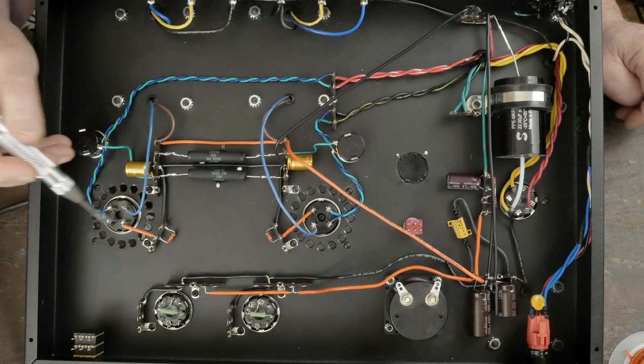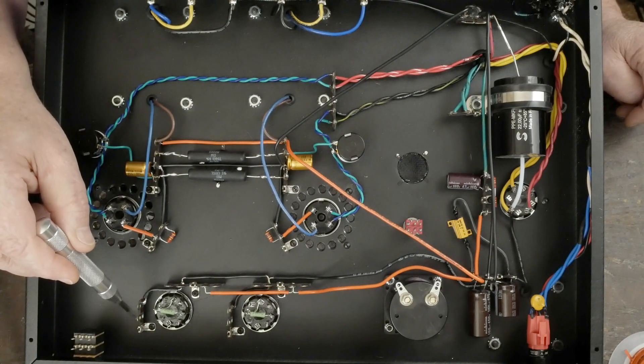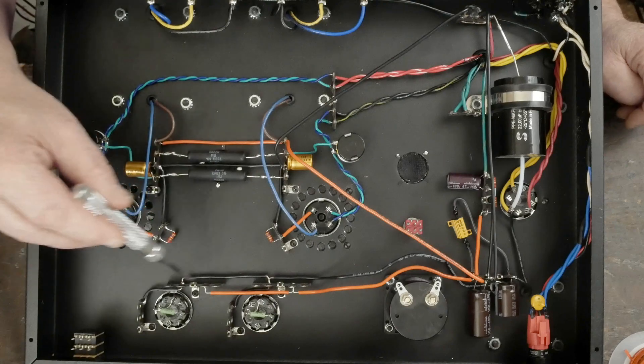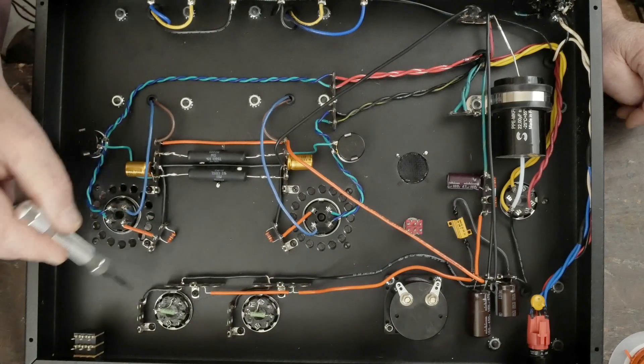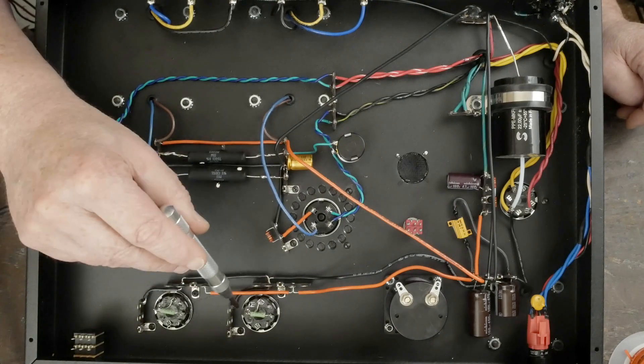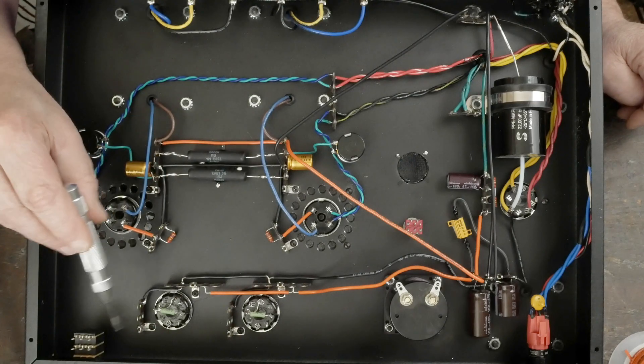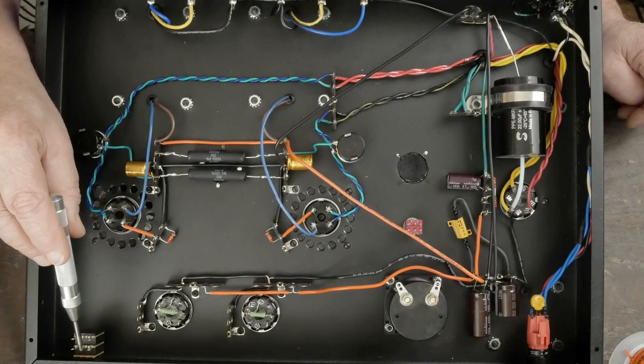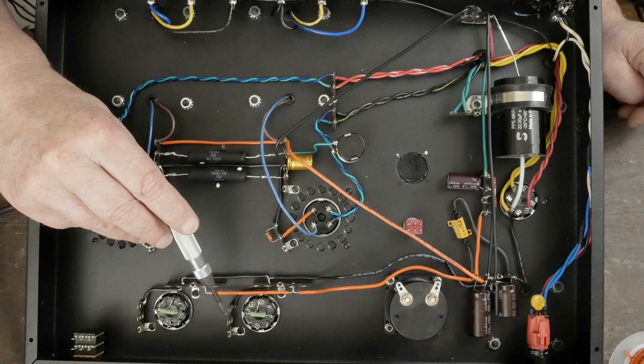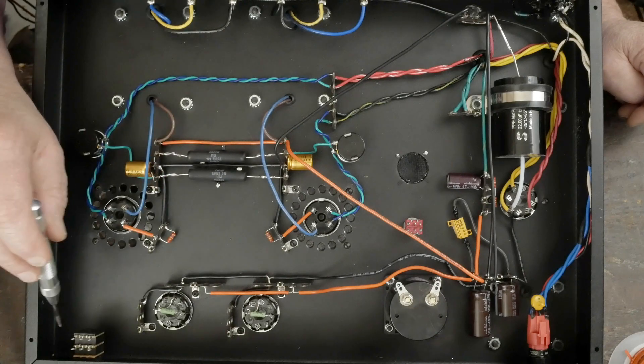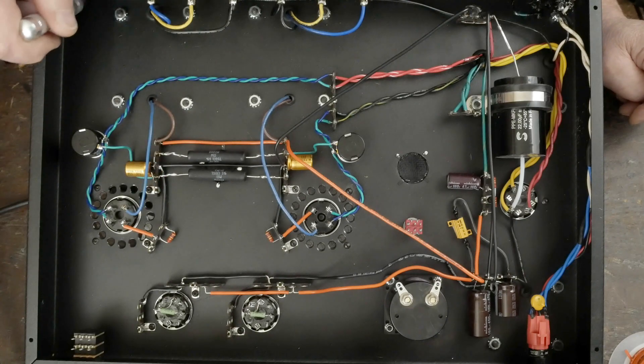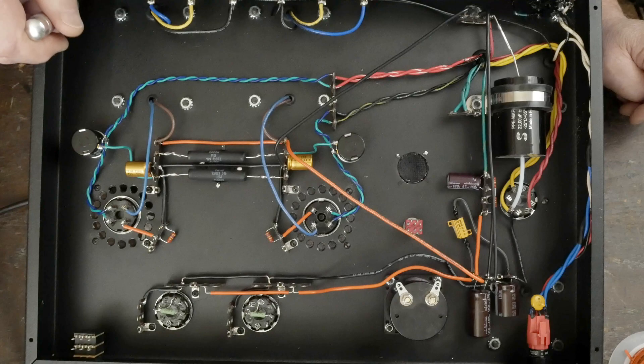Next I need to put some resistors and wire up this front end tube, then connect the shielded wire from the volume control to the grids of the front end tubes.